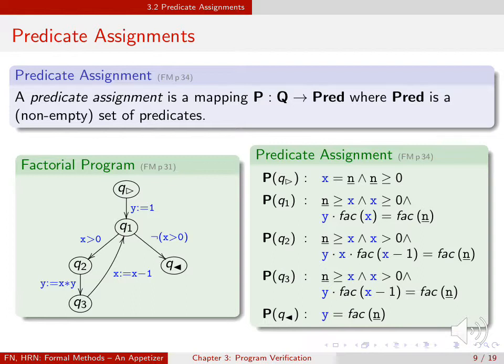At Q3 we say that x is between 1 and n, and that y times factorial of x minus 1 is factorial of n.